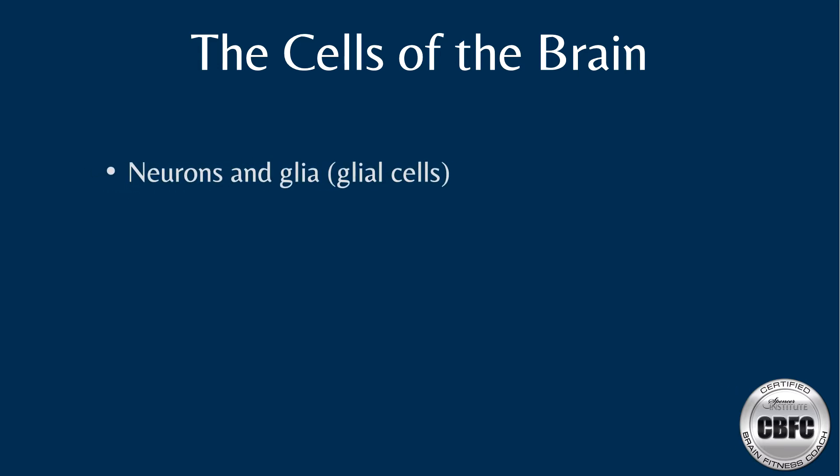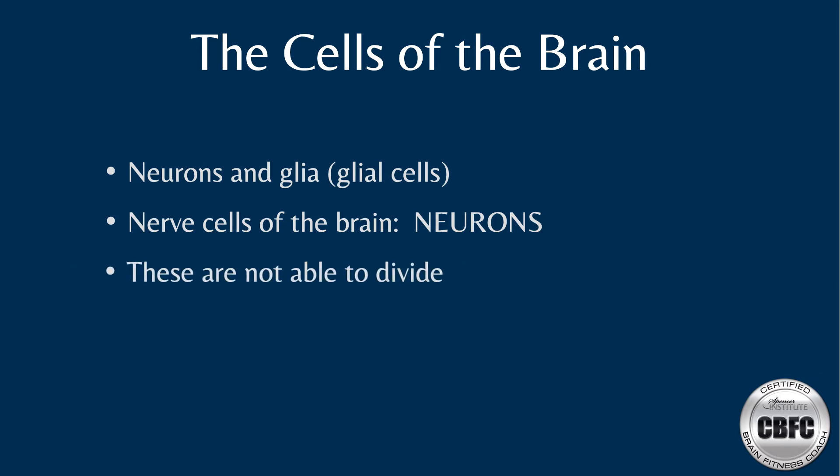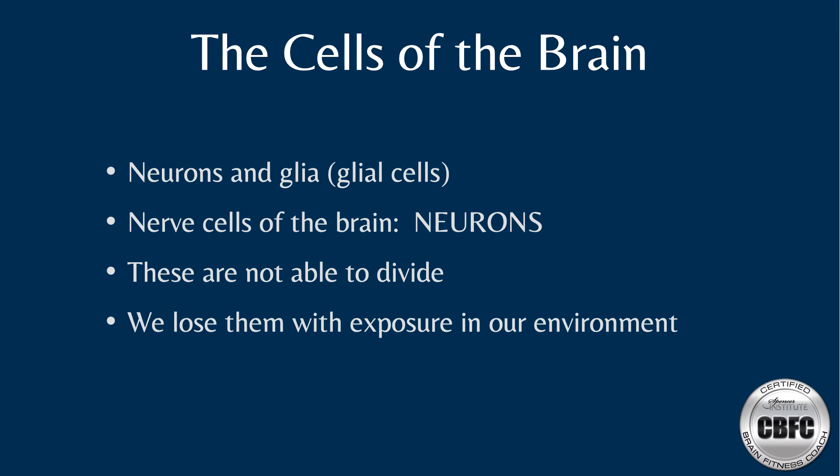The cells of our brains are comprised of both neurons and glia. Neurons are the nerve cells in the brain, and we are born with what we get for life — most cannot divide, making each one irreplaceable. In addition to their inability to divide, we also lose neurons from chronic exposure to environmental factors like heavy metals, pesticides, herbicides, and toxic chemicals, even through the air we breathe.